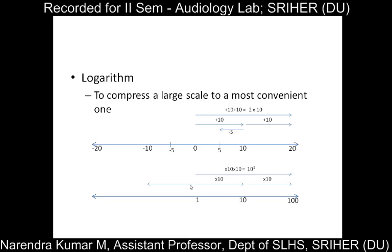Moving in the reverse direction: in linear scale it was subtraction, whereas in log scale it is division. 1 divided by 10 leads to 1/10. Going down another 10 units gives 1/100, then 1/1000, 1/10,000, 1 million. So we can approach closer to 0 — 0.0000001 — but never reach an actual 0 on a logarithmic scale. That is why we use the reference value of 1 for the logarithmic scale.